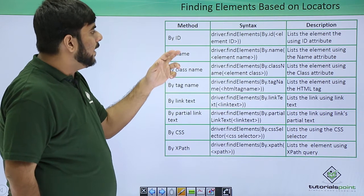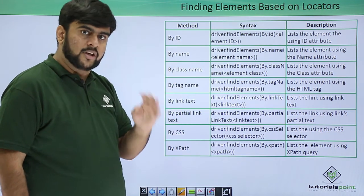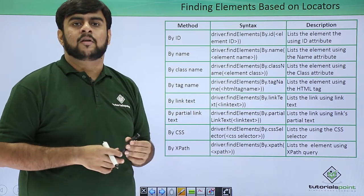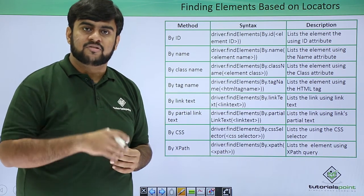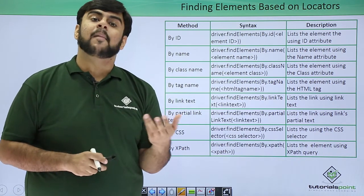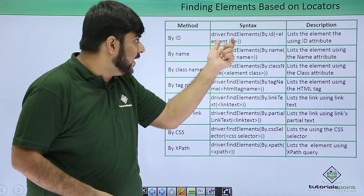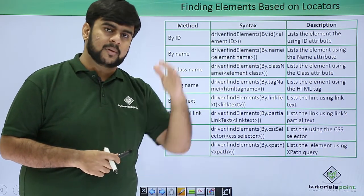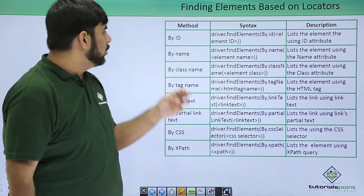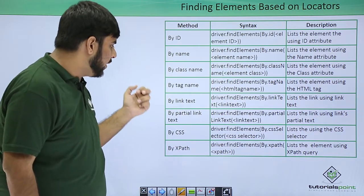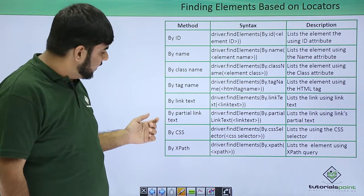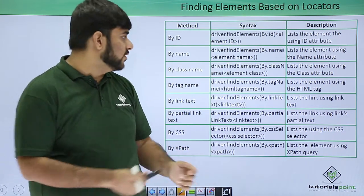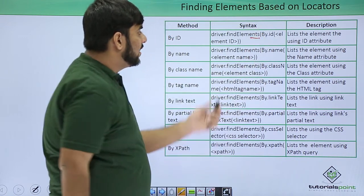So if I want to find a particular element I call the findElement function. If I have five input boxes whose ID is 1, I pass findElements by dot ID and pass the ID that is 1. It would return me the list of all the elements on the page. We can do it for ID, name, class name, tag name, link text, partial link text, CSS, and XPath. The entire process of calling remains the same — only difference is we pass the function as findElements.